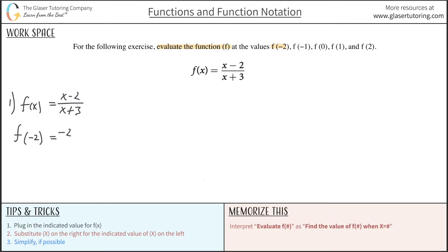This works out to be negative 2 minus 2 all over negative 2 plus 3. When I do the arithmetic, this is negative 4 in the numerator, the denominator is 1, so it's negative 4. That takes care of that one.